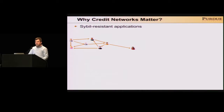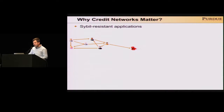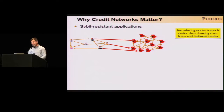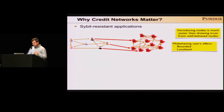At this moment you may wonder why we really care about credit networks. It turns out that credit networks tolerate misbehaving users. Imagine that a user becomes malicious — it's simple for them to create many other users under their control and create credit links between each other. However, it's difficult to get trust from honest users. So in a credit network, introducing nodes for an attacker is way easier than drawing trust from honest nodes. Such asymmetry allows us to characterize the misbehaving user effect. The effect is localized to those users that have extended credit to the attacker, and is bounded by the amount of credit honest users have extended to the attacker.